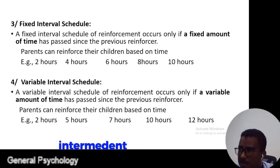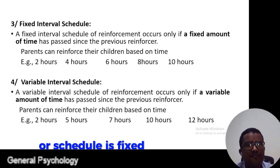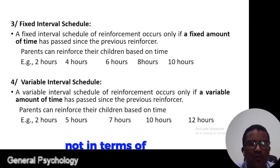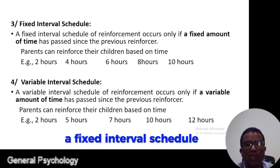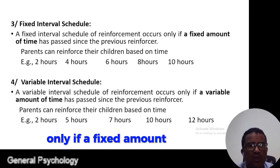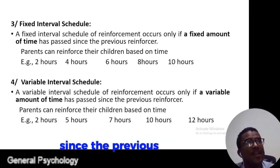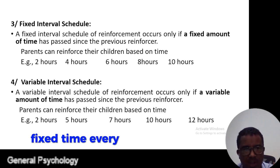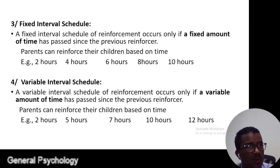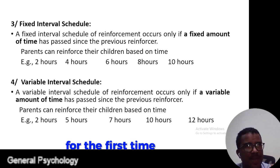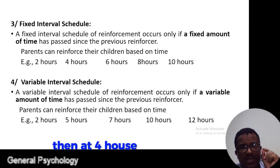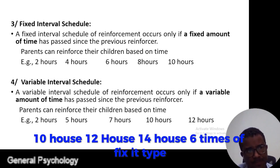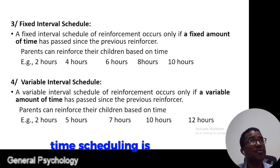The third type is the fixed interval schedule. This is rewarded in terms of time, not in terms of response. A fixed interval schedule of reinforcement occurs only if a fixed amount of time has passed since the previous reinforcement. Parents can reinforce their children based on fixed time intervals — for example, every two hours: at two hours, four hours, six hours, eight hours, and so on. This kind of fixed time scheduling is the fixed interval schedule.